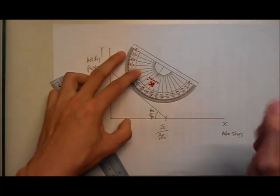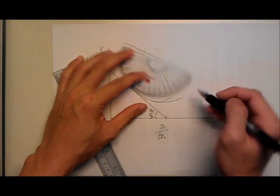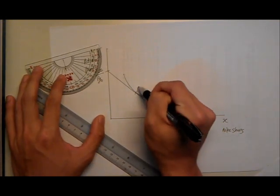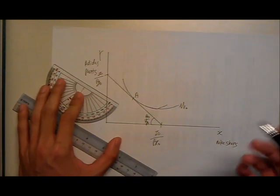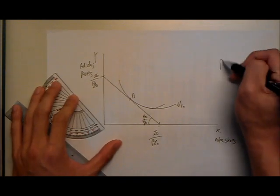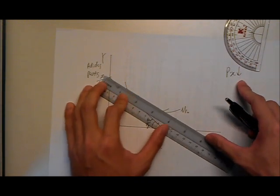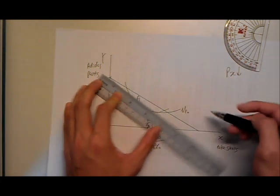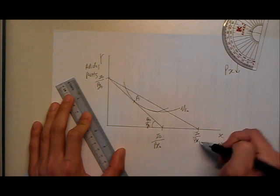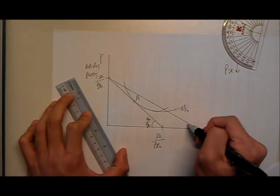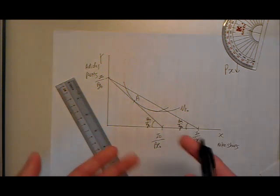And now we have our indifference curve. The individual is initially at point A. Now let's look at what happens when there is a decrease in the price of X. This will swing our budget line outwards because in terms of real income, the individual has benefited for X.